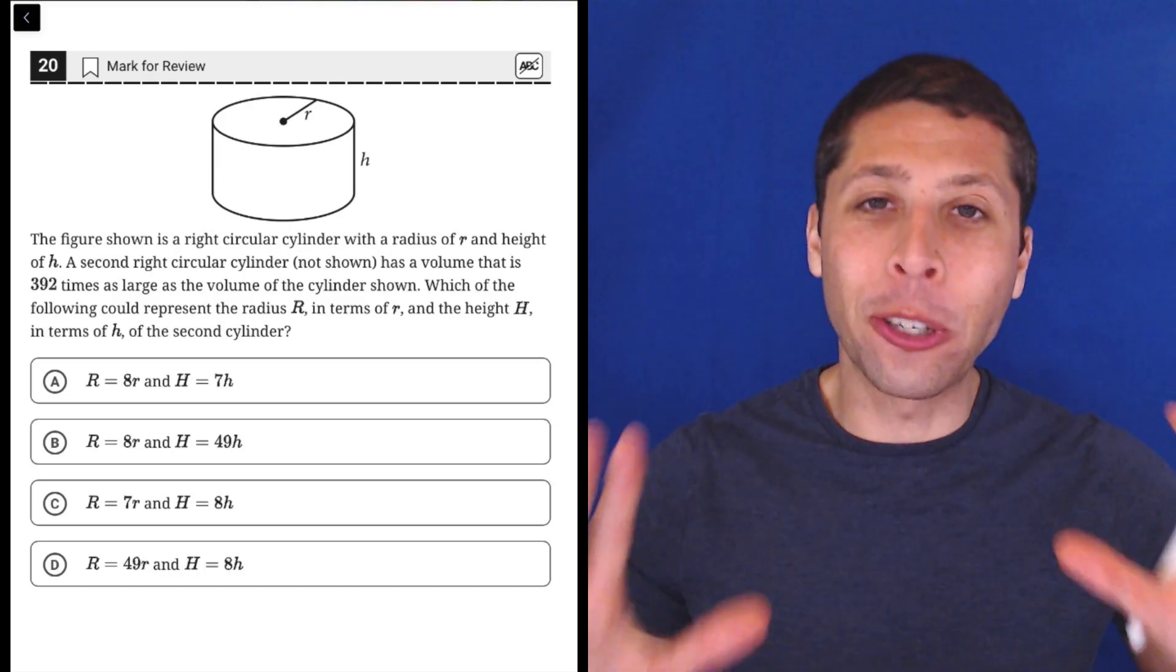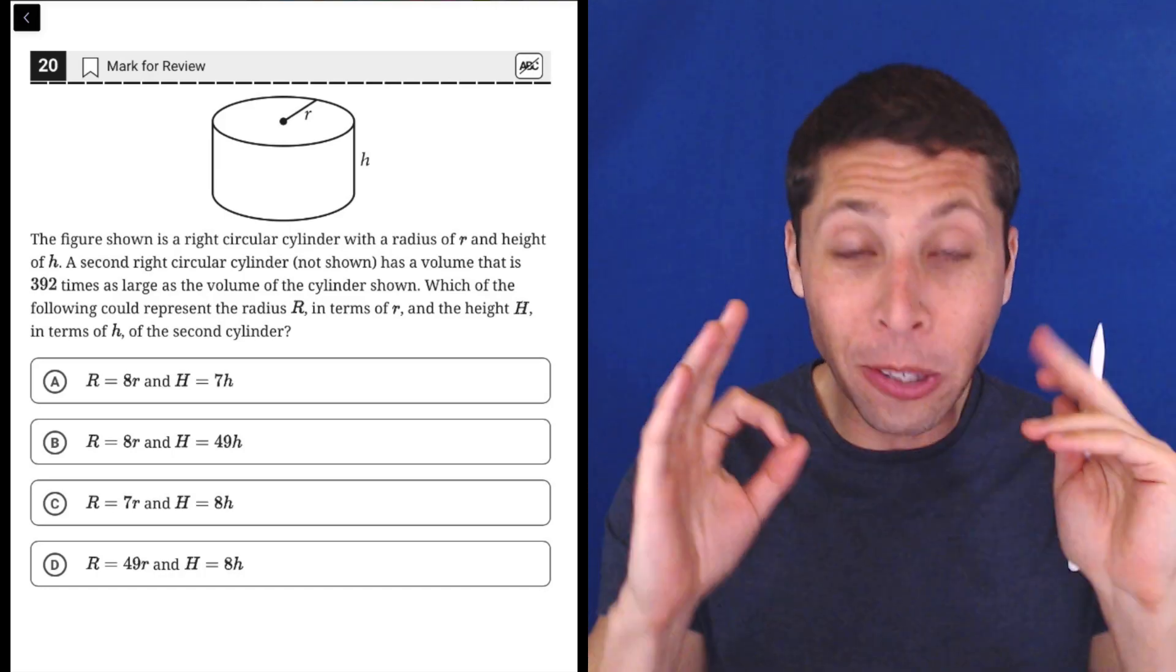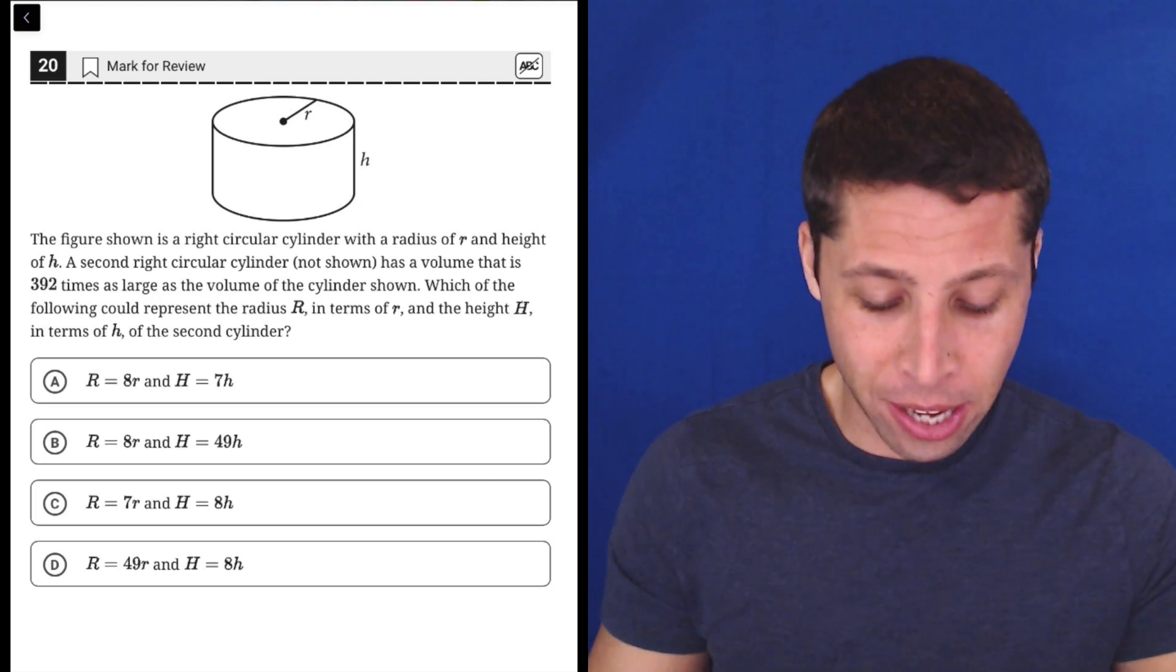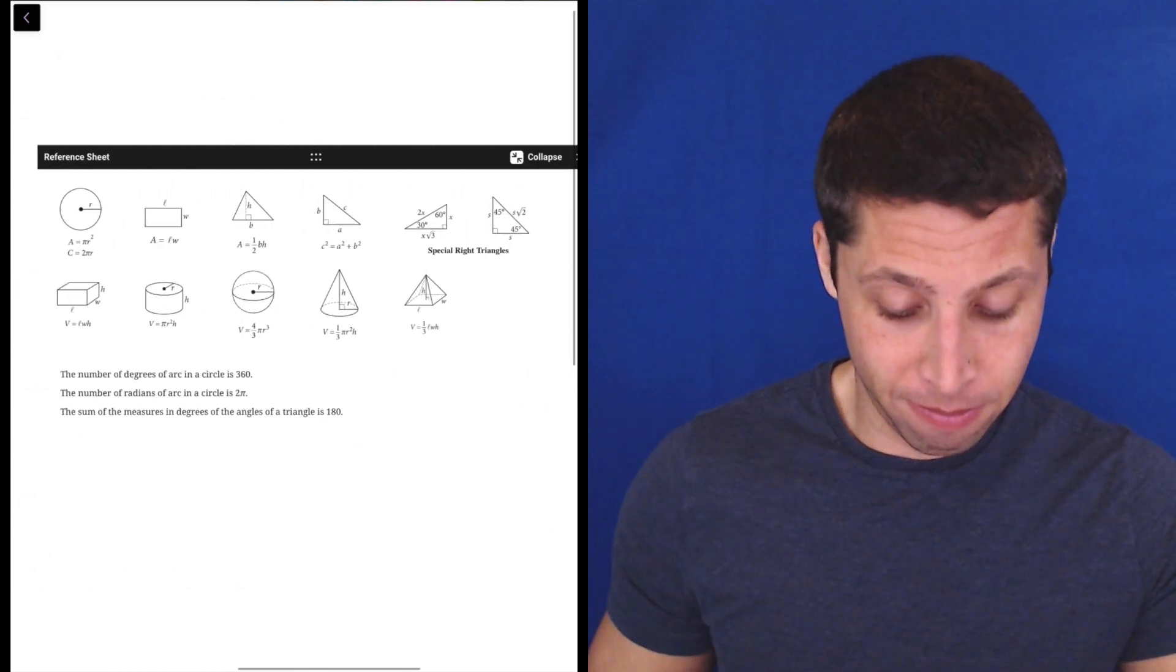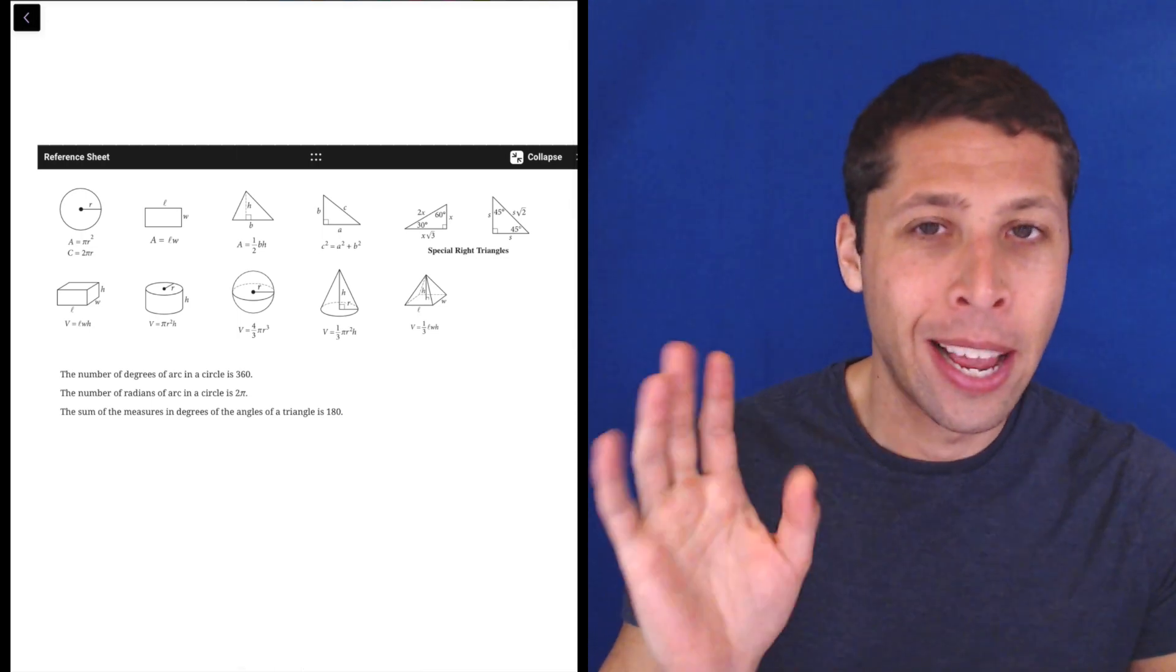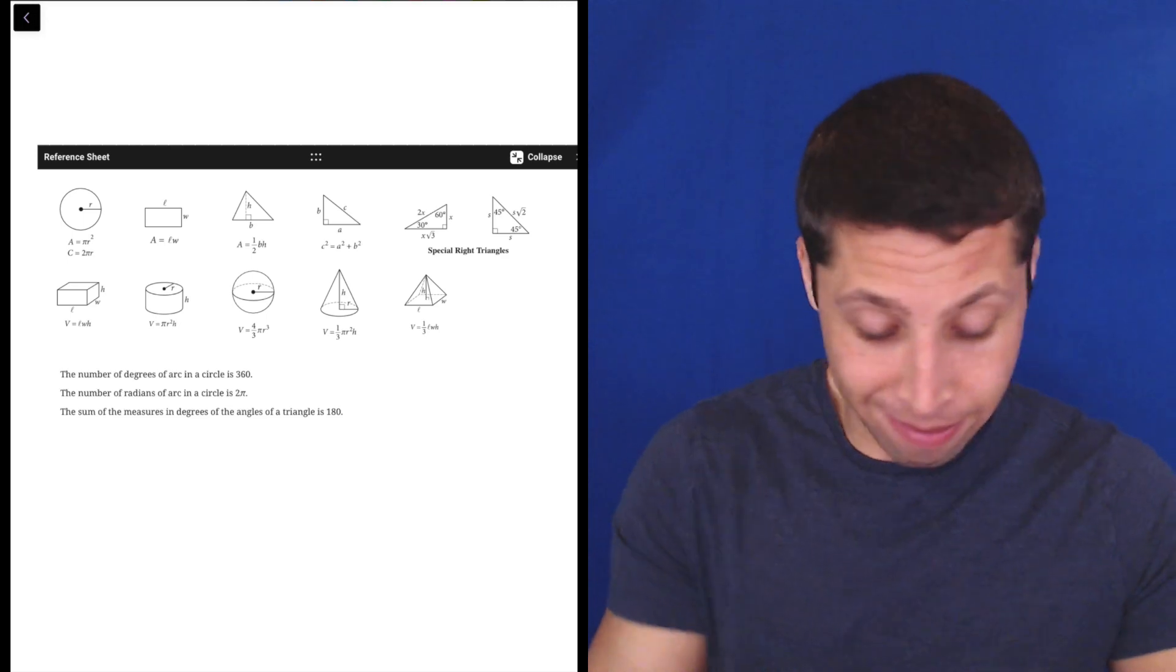Alright, so there are lots of reasons you could get this wrong. This is definitely a hard question, but one reason you cannot get this wrong is that you somehow forget the formula of a cylinder. They give it to you. It's in the reference chart at the top of the Blue Book app. Just click the little X squared button, and this will pop up.